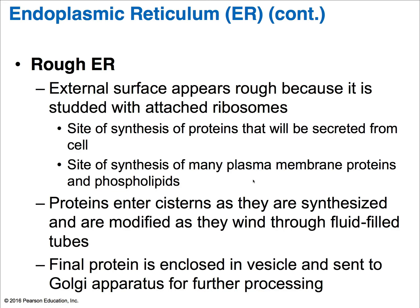The final protein ends up enclosed in a vesicle and gets sent out of the rough ER to the Golgi apparatus for further processing. The Golgi apparatus ends up making modifications, packaging the product, and then shipping it out of the cell.